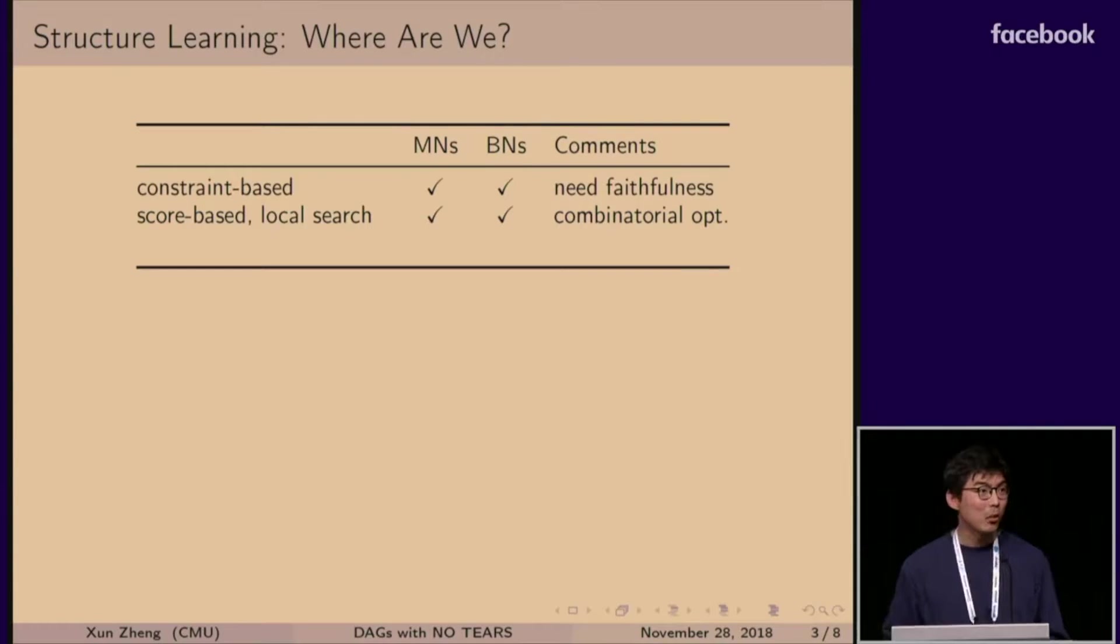So let's talk about where we are in the literature. There are two types of graphical models. One is undirected ones called Markov networks, and directed ones are called Bayesian networks. And their literature share same patterns. So first common method is called Bayesian constraint-based learning method, where you do a bunch of hypothesis tests to figure out the independent sets between variables, and then you construct the graph out of the independent sets. However, this method has some drawbacks, like it requires strong assumptions, such as faithfulness.